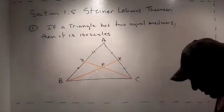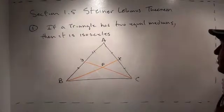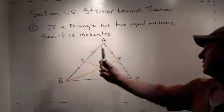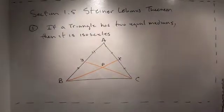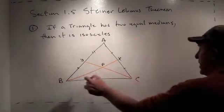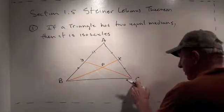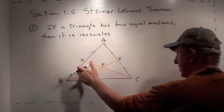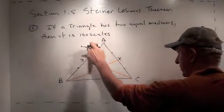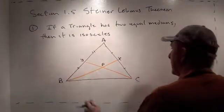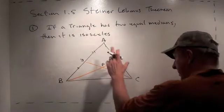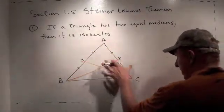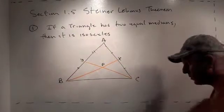Here's our little theorem we're going to prove: if a triangle has two equal medians, then that triangle is isosceles. Here's my triangle ABC. I've drawn the median CY — a median just means that it cuts the opposite side into two equal parts, so this little line segment equals this one. I've drawn another median BX, and that median cuts the opposite side into two equal parts. We don't know yet if those sides are the same.